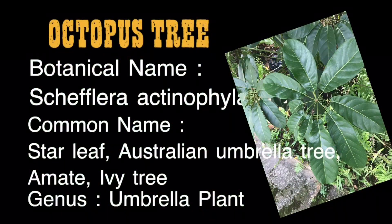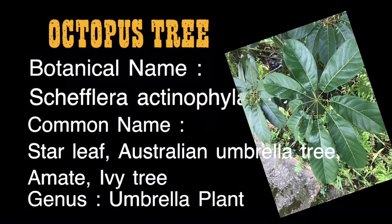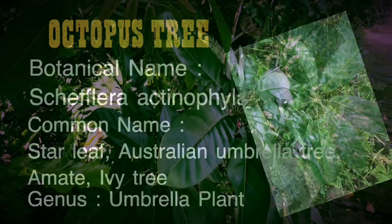The plant name is Octopus Tree. The botanical name is Schefflera actinophylla. The common names are Star Leaf, Australian Umbrella Tree, Amate, and Ivy Tree.